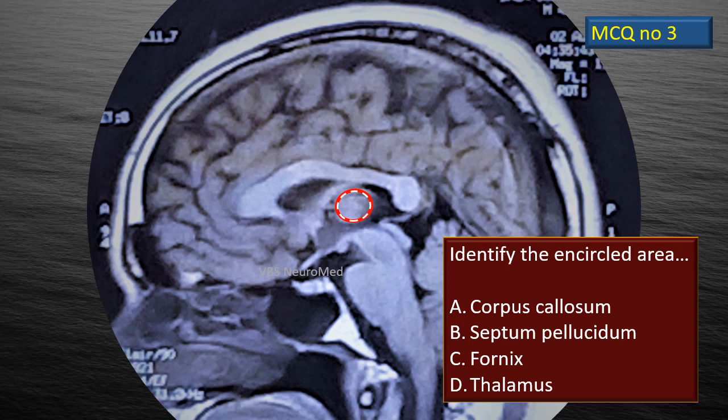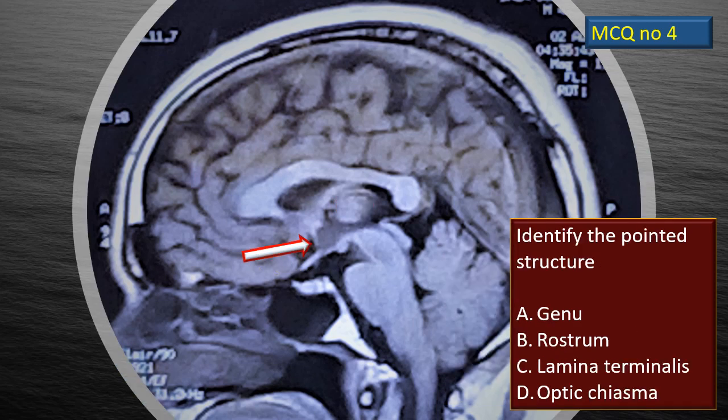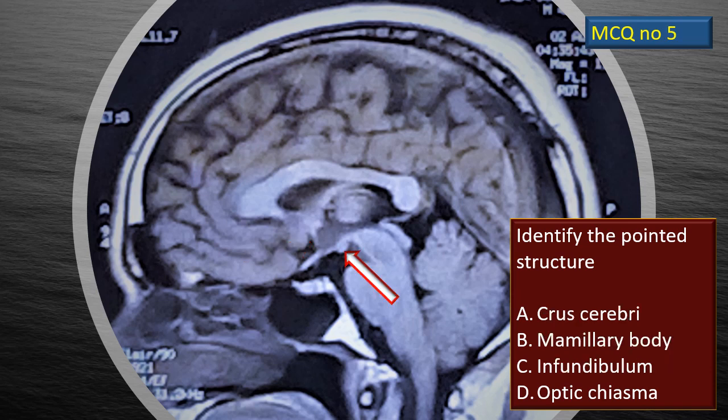MCQ number 3: there is a flashing dotted area, a circle with red and white dots, pointing to a particular structure. Identify that encircled area. MCQ number 4: there is an arrow mark on an MRI mid-sagittal section. Identify that particular structure. Last MCQ: another structure has been pointed out by an arrow on the same MRI mid-sagittal section. Identify the pointed structure.